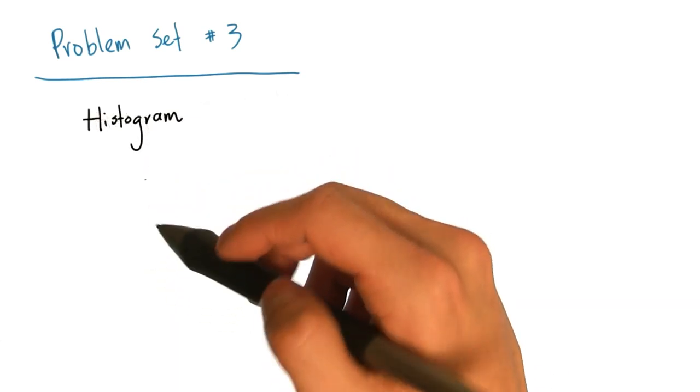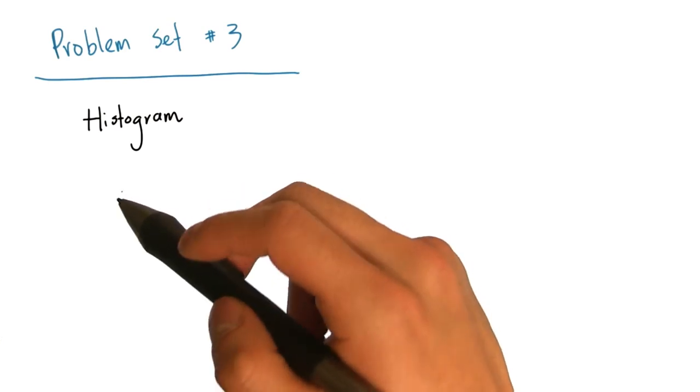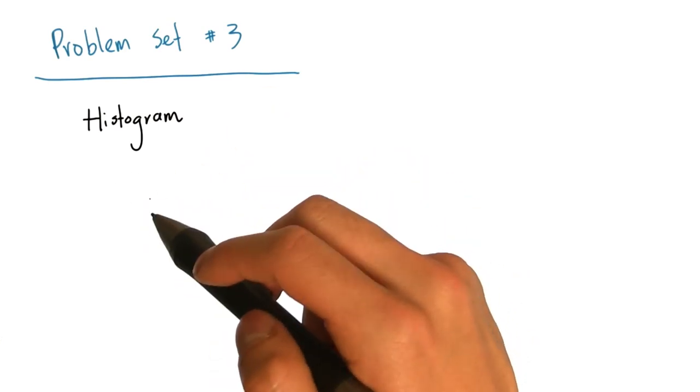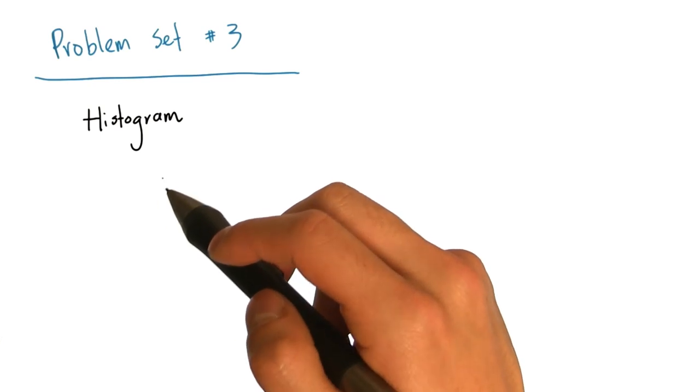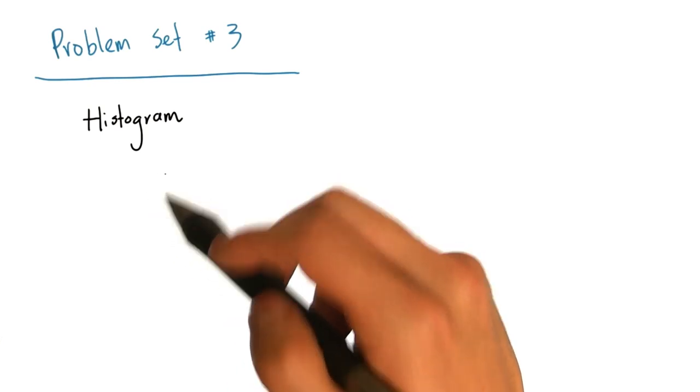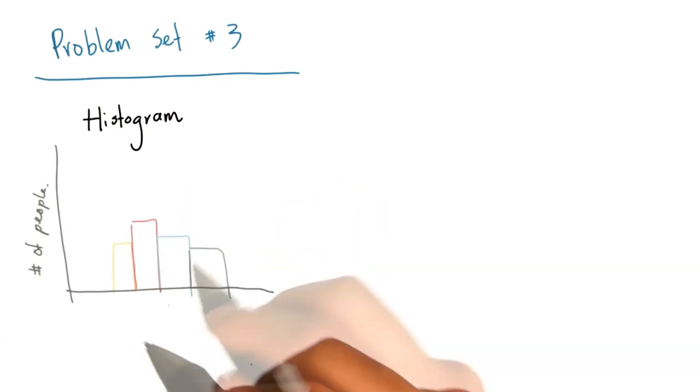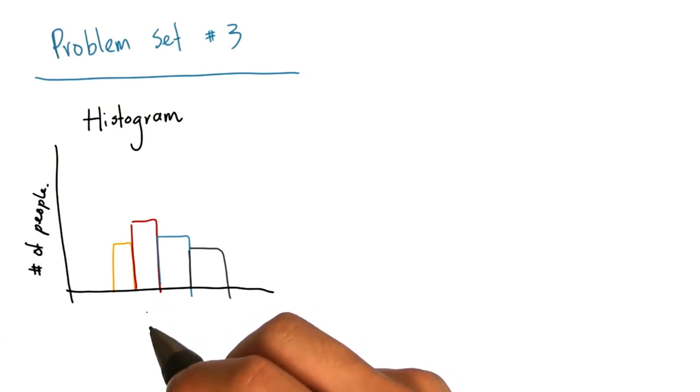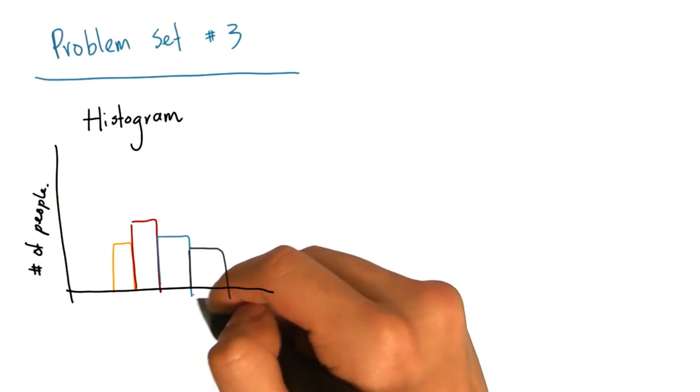Recall that a histogram counts the number of occurrences of something in the data set. For example, if we measure the heights of everyone taking this class and compute a histogram of the heights, it may look something like this. The height of each bar in this histogram is the count of how many people's height fall into a particular range.